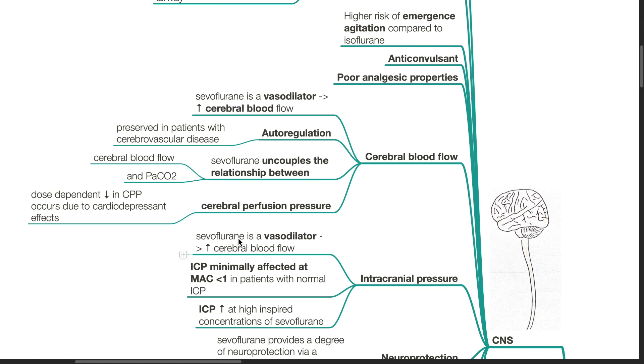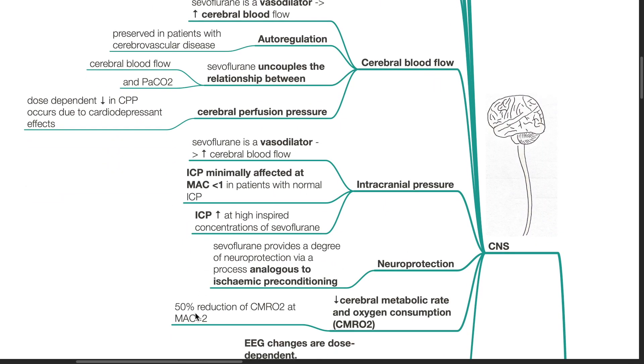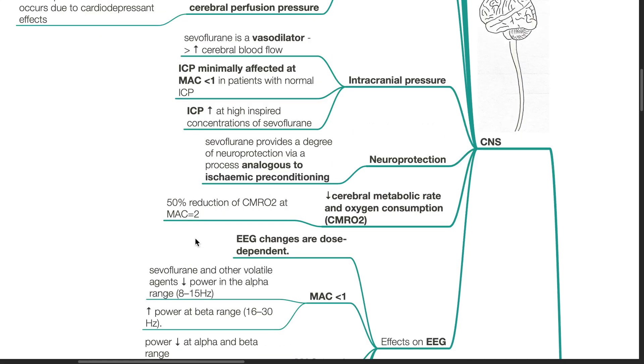However, ICP is minimally affected at MAC values of less than 1 in patients with normal ICP. However, ICP can increase at high inspired concentrations of Sevoflurane. Neuroprotection. Sevoflurane provides a degree of neuroprotection via a process analogous to ischemic preconditioning. There is decrease in cerebral metabolic rate and oxygen consumption. 50% reduction of CMRO2 occurs at MAC of 2.